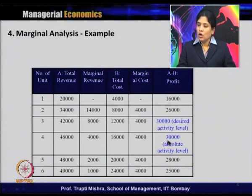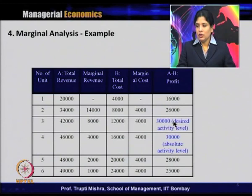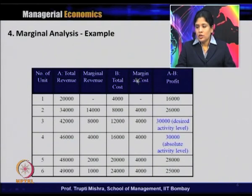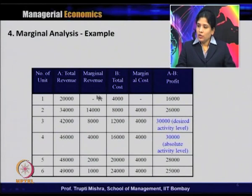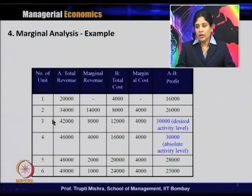For any producer, what should be the desired activity level and what should be the absolute activity level? The difference is determined on the basis of profit and on the values of marginal revenue and marginal cost. Looking at the table, cost remains constant and marginal cost remains constant, while marginal revenue is decreasing — it started at 14,000 and fell to 1,000. Profit is 16,000 for one unit, 26,000 for two, 30,000 for three, and 30,000 for four.